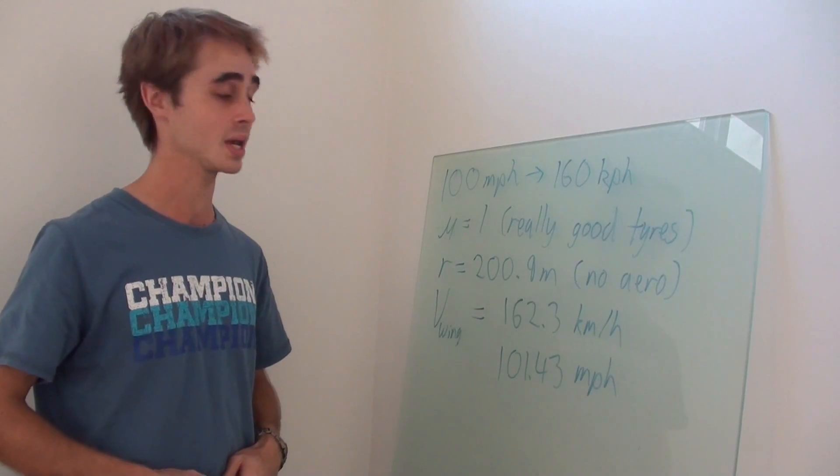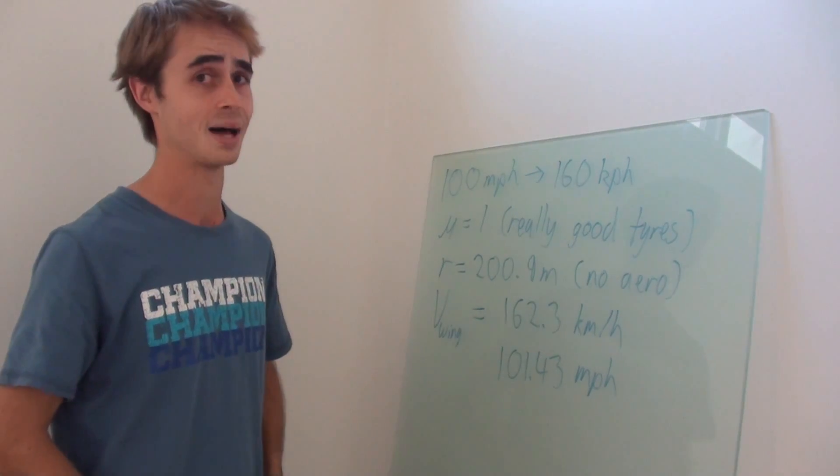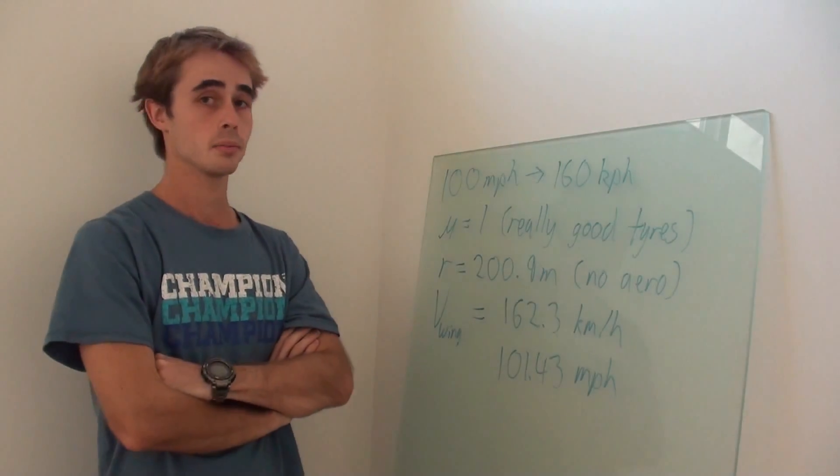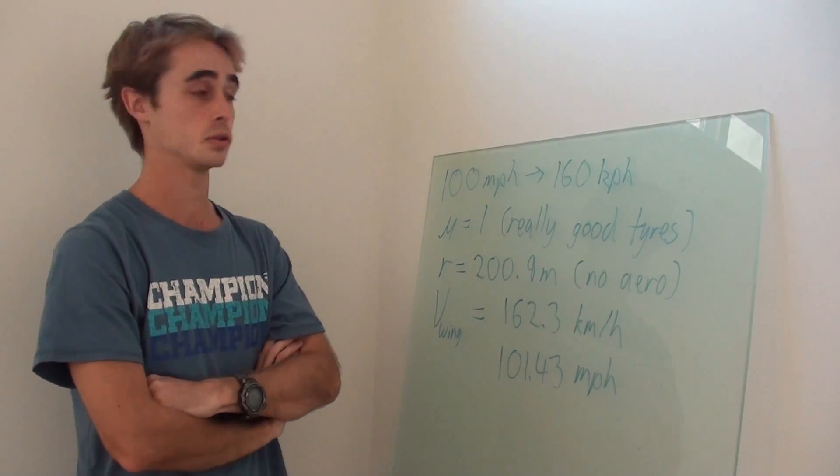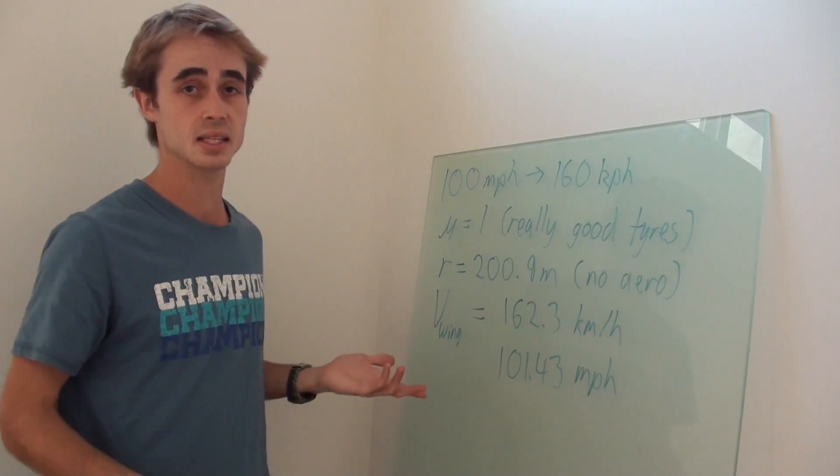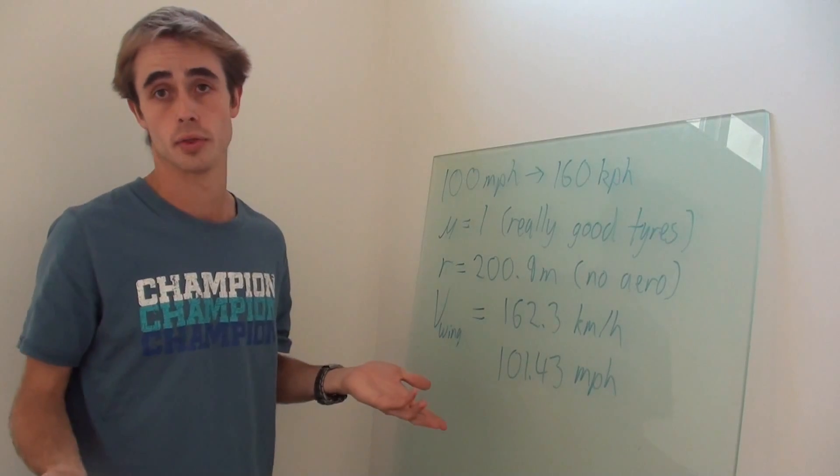So with your super efficient wing, you've gained an entire 1.4 miles an hour. And you know, even that number isn't true, because you have losses that aren't shown in this equation. So basically, you're not going to feel a wing on the road.